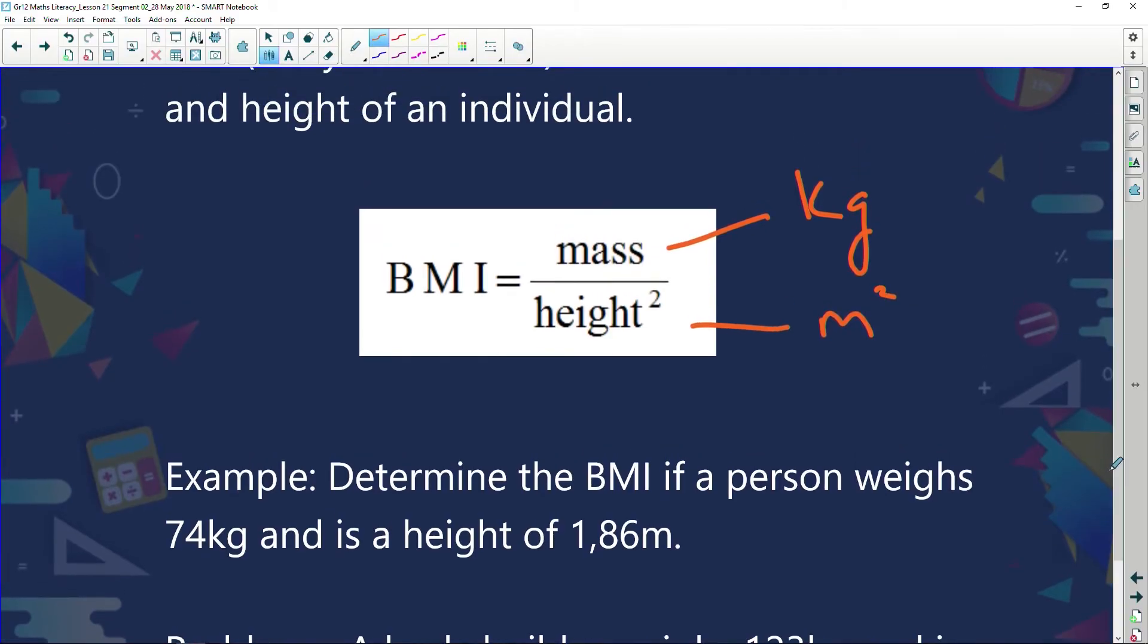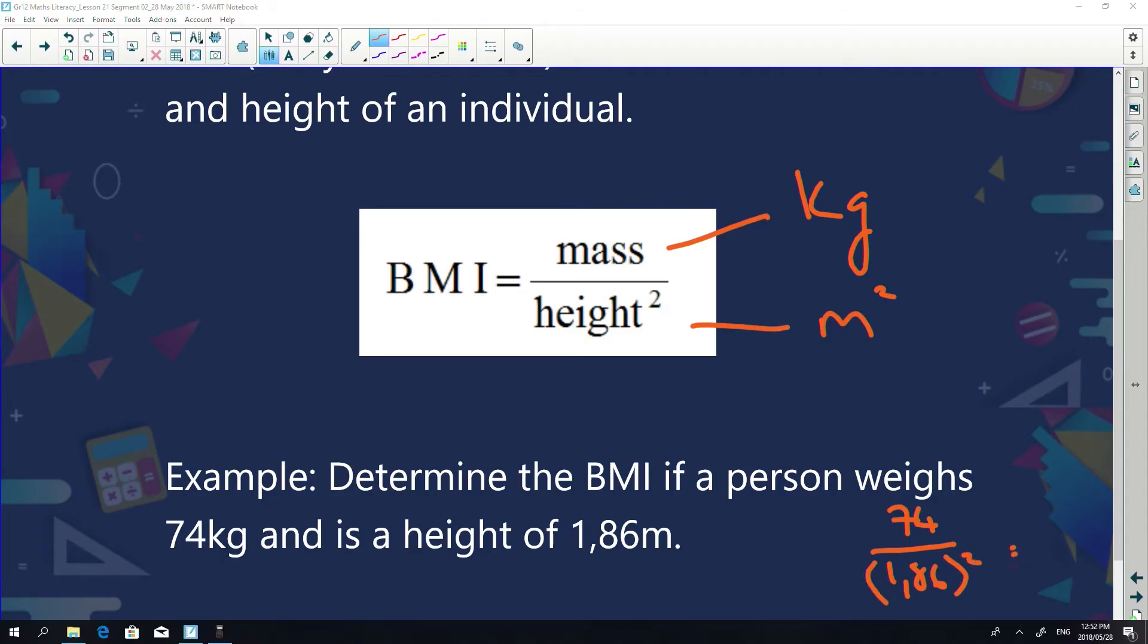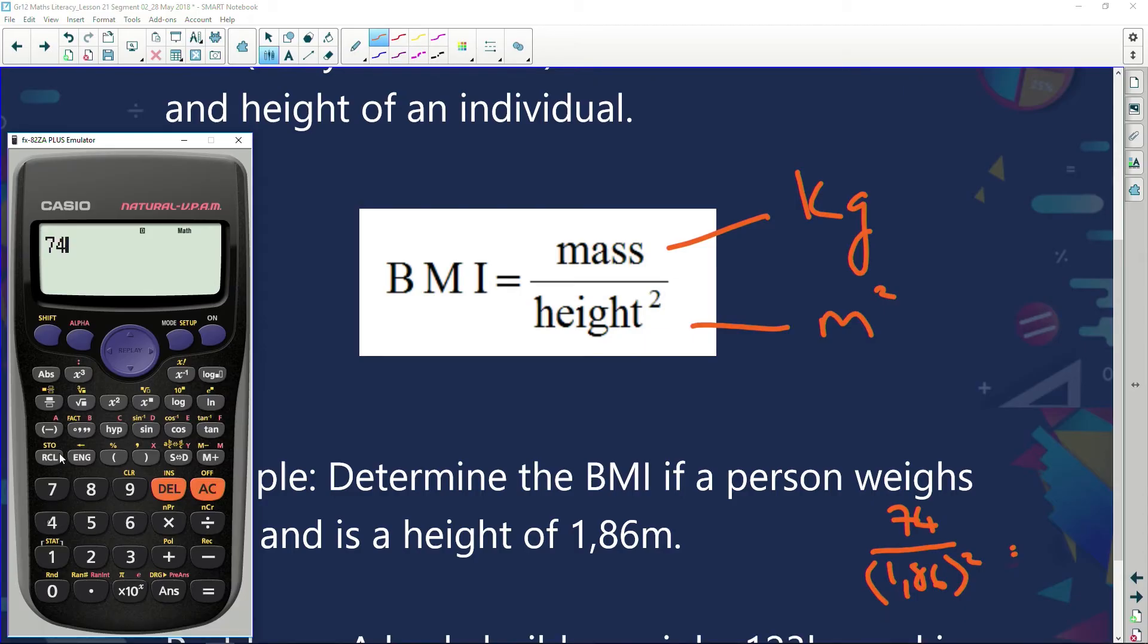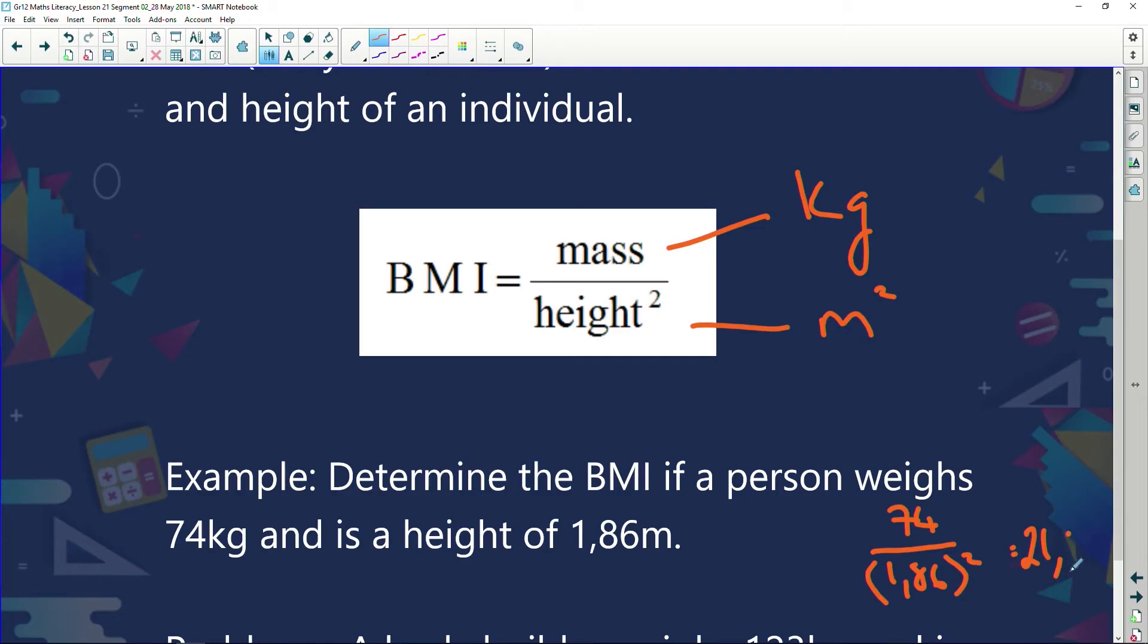Determine the BMI of a person who weighs 74 kilograms and is a height of 1.86 meters. So we say I've got 74 kilograms, a height of 1.86 meters, and I'm going to square that. My calculator is going to do it: 74 over 1.86 squared, and we get an answer of 21.39. I'm going to say 21.4.